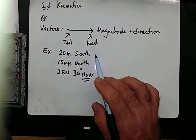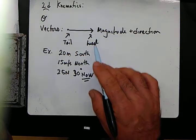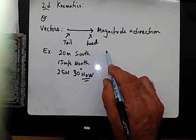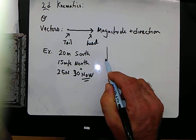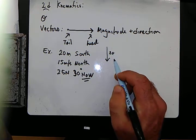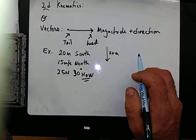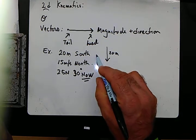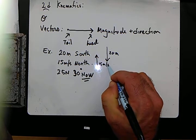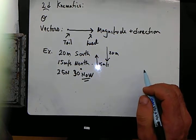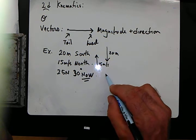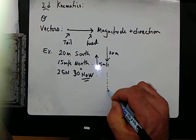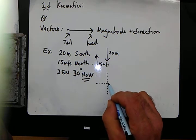So these are all examples of vectors that you could draw as an arrow. What I might call 20 meters south might look like this. What I might draw as this one might look like this. And then this one, north of west. So we're getting into a little bit of a coordinate plane type of system here.